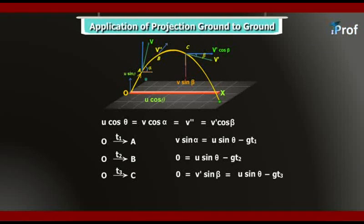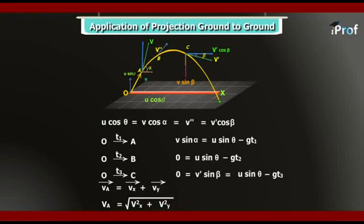To find velocity at any point in projectile motion, velocity has two components — in the x-direction and y-direction. The magnitude of velocity at any point equals √(vx² + vy²), where vx = u·cosθ and vy = u·sinθ − g·t at any time t. Substitute the values, square them, sum, and take the root to get the speed v. To find the direction, take tan(α) = vy / vx with the actual signs of vy and vx, and you will get the direction of the projectile.